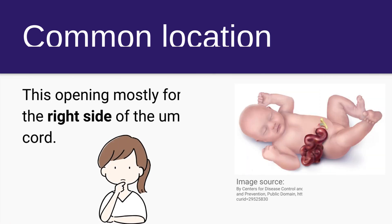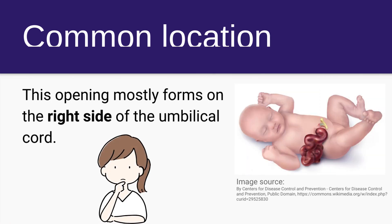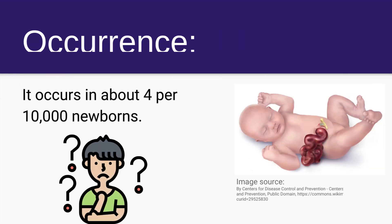Common location where it is mostly seen in newborns: this opening mostly forms on the right side of the umbilical cord. Ratio of occurrence: it occurs in about 4 per 10,000 newborns.